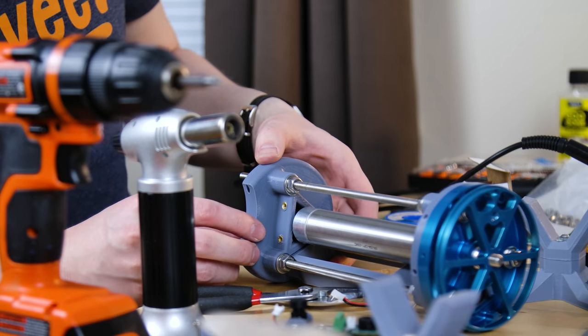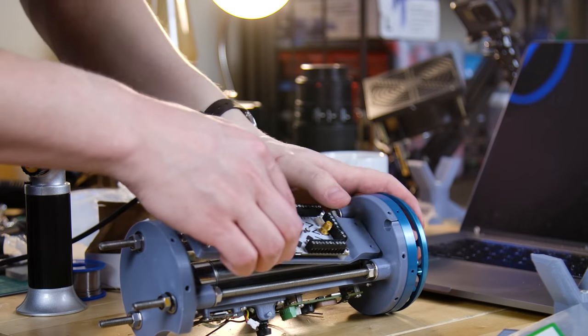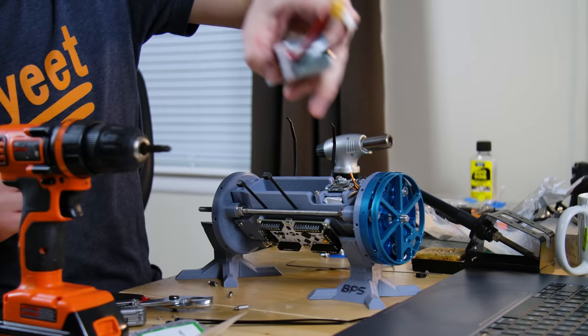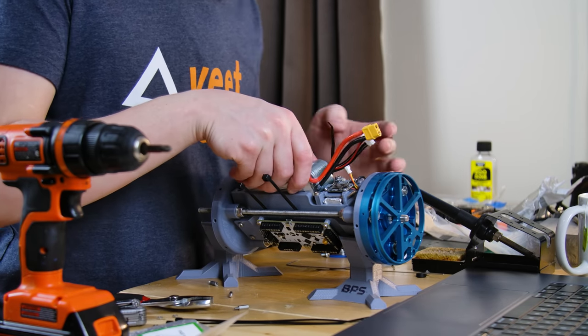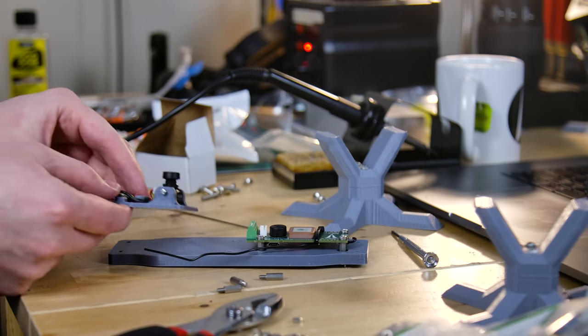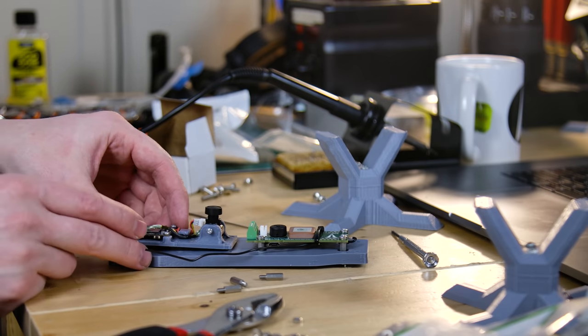The avionics bay was set up with a drogue deployment piston in the center, AVA on one sled, Telemetrum on another sled, and the third sled for the batteries. We also had two cameras in the avionics bay, one looking up, one looking out, and both died on impact. We actually have the SD cards and probably the footage from these cameras, but I can't get it off.